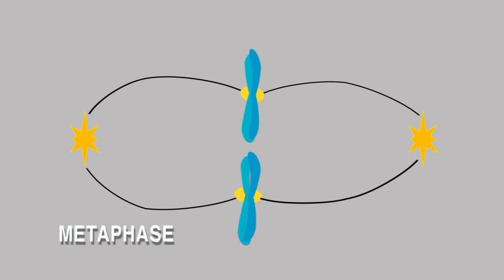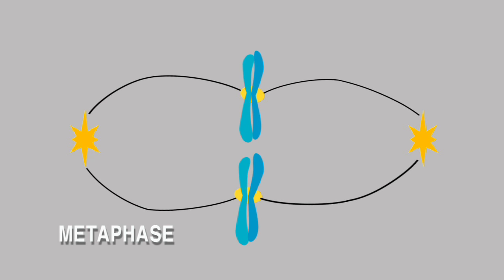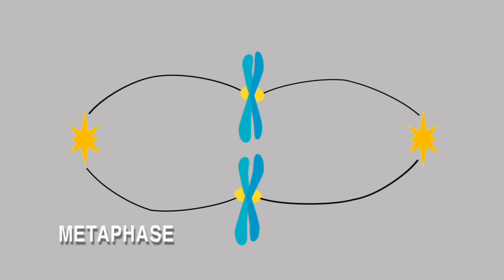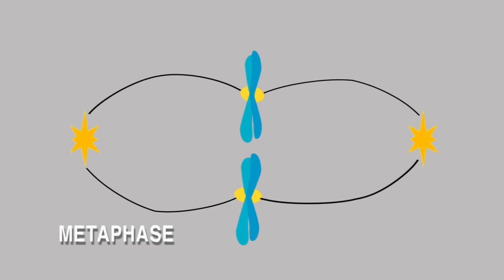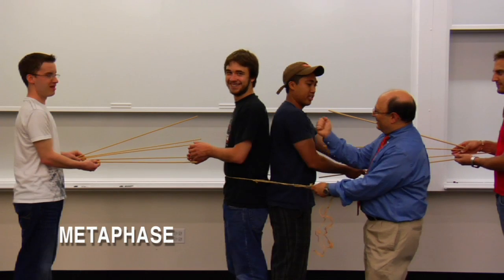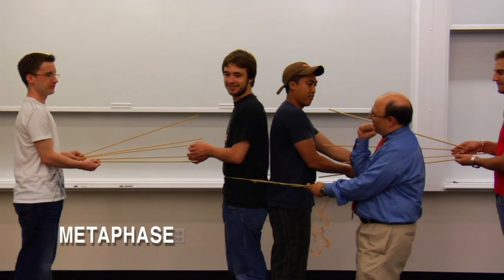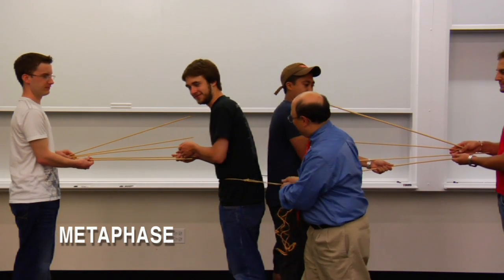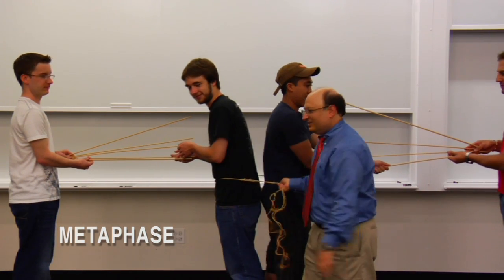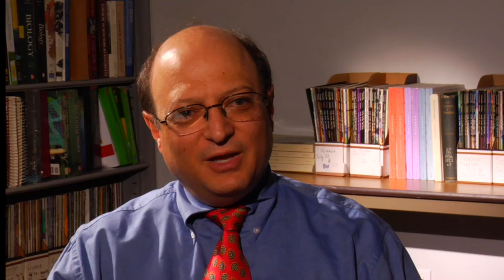Then the next stage is metaphase, where the two duplicated chromosomes — the two sister chromatids — are in the middle of the cell, equidistant from the two sites at which these microtubules form.